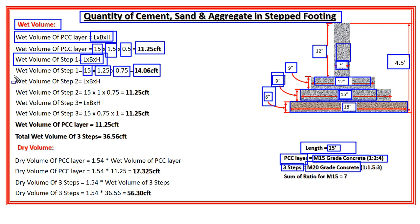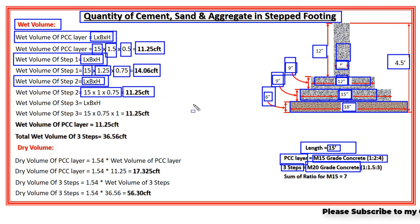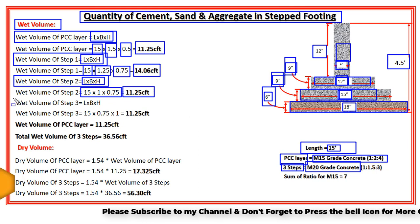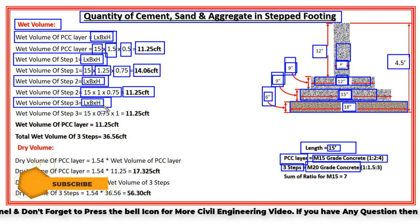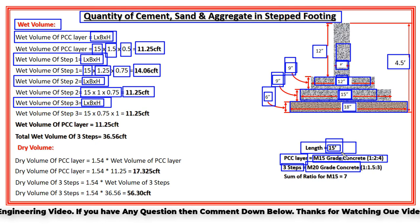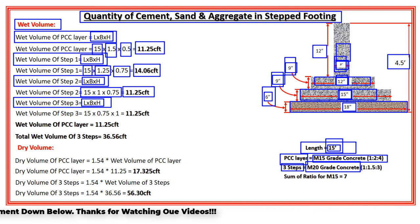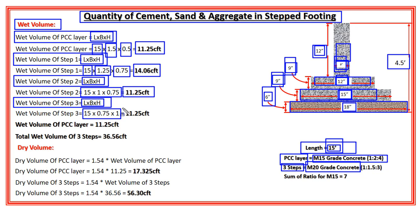The wet volume of step 2 equals length × breadth × height. The length is 15 feet, the width of step 2 is 12 inches which equals 1 foot, and the height is 9 inches which equals 0.75 feet. After putting in the values, the wet volume of step 2 = 11.25 cubic feet. Similarly, the wet volume of step 3: length is 15 feet, width is 9 inches which equals 0.75 feet, and height is 12 inches which equals 1 foot. So the wet volume of step 3 = 11.25 cubic feet.